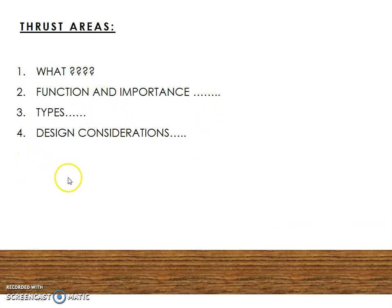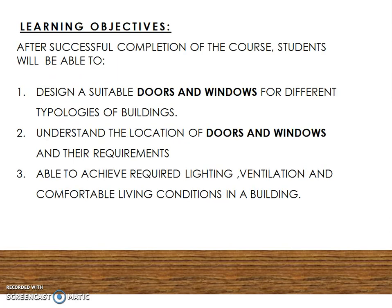The types of doors and windows we are going to discuss specifically are panel and flush doors and louvered windows. We will also look at what factors should be considered while designing a particular type of door or window. The learning objective is that after successful completion of the course, students will be able to design a suitable door and window for different typologies of building.